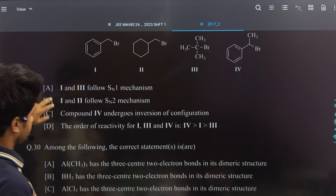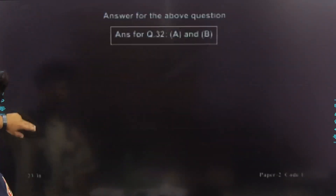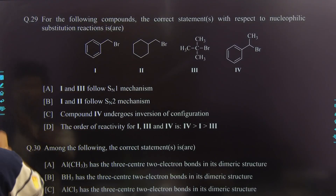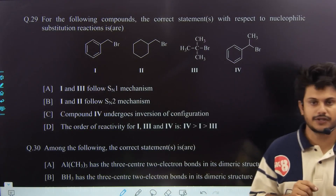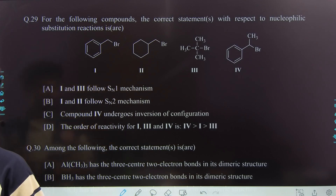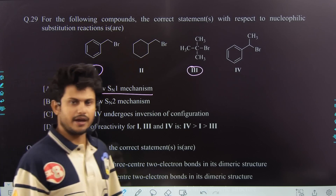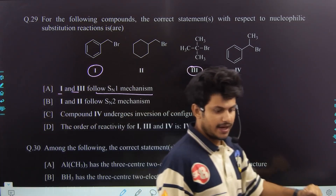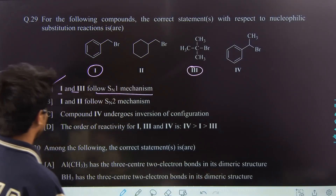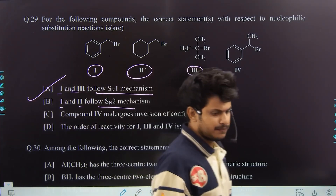Question number 29 is on nucleophilic substitution reactions. Which statements are correct? Compounds 1 and 3 follow SN1 mechanism — 1 is benzylic and 3 is tert-butyl — absolutely correct, both have stable carbocations. Compounds 1 and 2 follow SN2 mechanism. If you've studied from good teachers, you'd know that benzylic and allylic positions stabilize the SN2 transition state through electron donation, so SN2 is also favorable there.